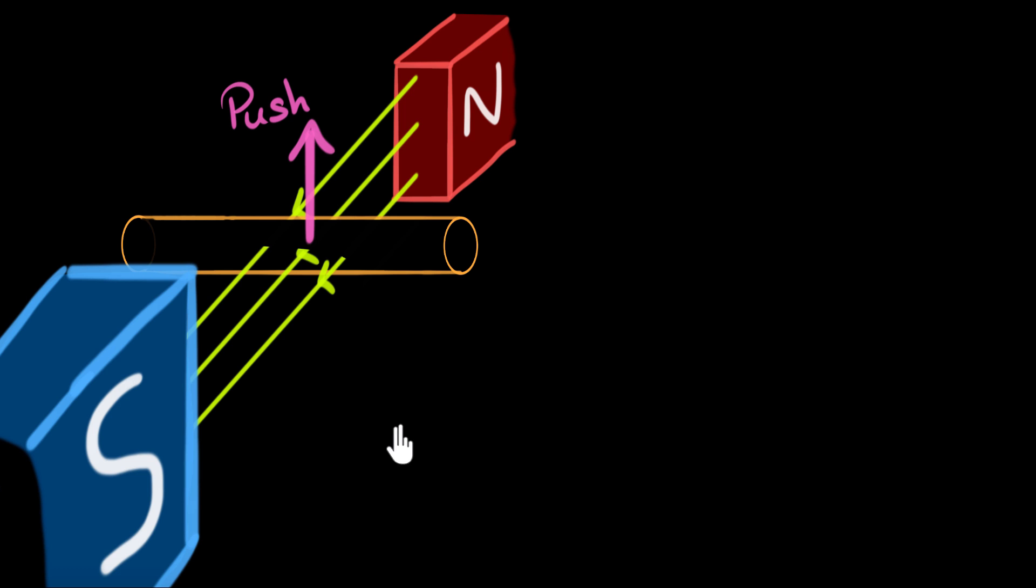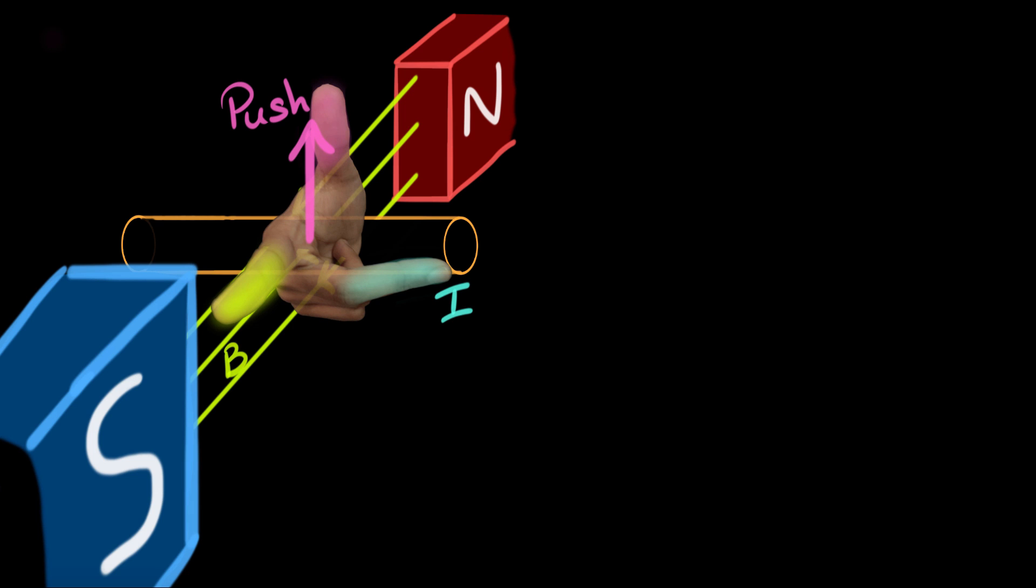We have to bring in our right hand. And if you align it according to the magnetic field and the motion of the conductor, it would look somewhat like this. The forefinger points in the direction of the magnetic field, and the thumb must point in the direction of the motion of the conductor, in the direction in which we are pushing the conductor. Then notice the middle finger points to the right.